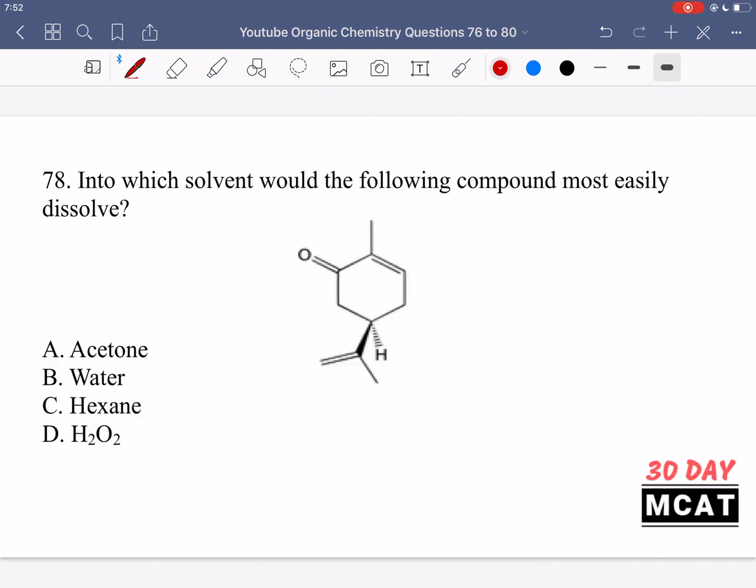In question 78, we're asked into which solvent will the following compound most easily dissolve? So we want to know the solvent that this compound dissolves in. That means we have to look at the properties of this compound. The compound is overall pretty hydrophobic because you see all these carbons and hydrogens. But the exception is this ketone group over here, which means it has some polarity. So we need some type of organic solvent which can dissolve this organic compound, but also a polar organic solvent.